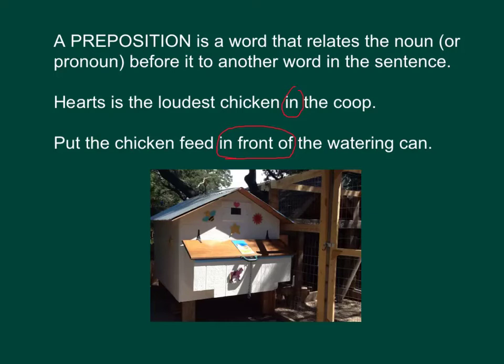So for the chicken grammar example, you see: 'Hearts is the loudest chicken in the coop.' And 'in' is the preposition, and it is relating the noun before it — chicken — to another word in the sentence. Which other word is it? It's talking about he is in the coop. So the preposition 'in' is relating chicken to coop. It's telling us where he is.